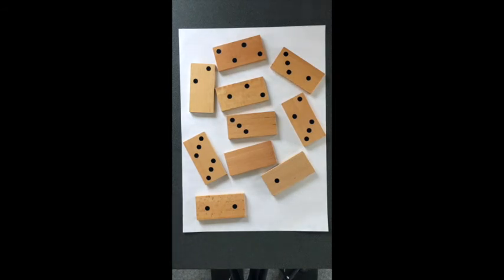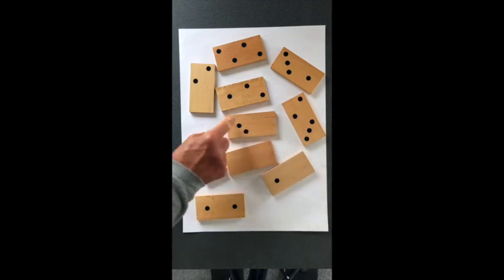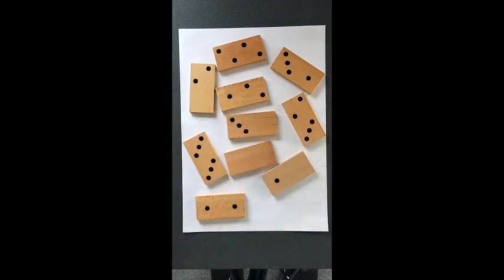OK, two questions. The first question is how can I work out how many spots there are all together without counting every single spot. So instead of going 1, 2, 3, 4, 5, 6, 7, 8, 9, 10, 11 and so on, how might I find a way of working out the total number of spots without counting them one by one.